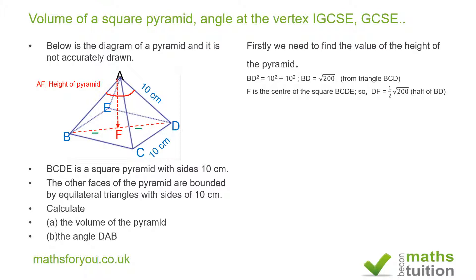Having found DF, I need to find AF — the height of the pyramid. In triangle AFD, AF is the height and AD is the hypotenuse. So AF squared equals the hypotenuse squared minus DF squared, which is 10 squared minus the square of one half of root 200. Squaring one half gives one quarter, and squaring root 200 gives 200, so DF squared equals 200 divided by 4, which is 50.